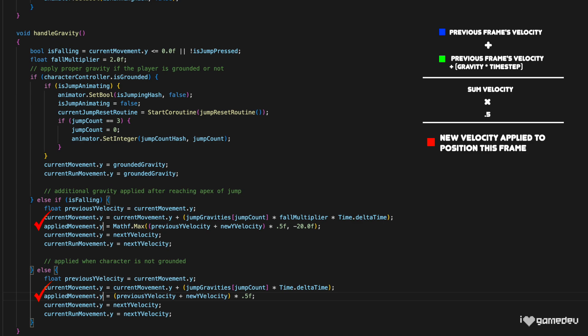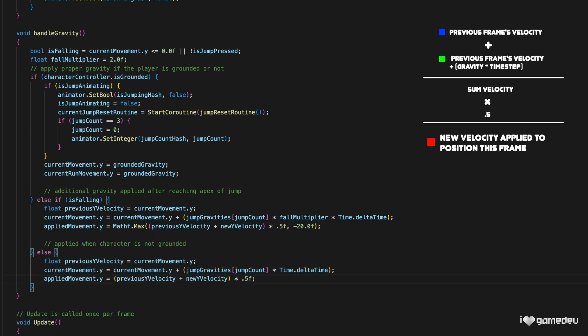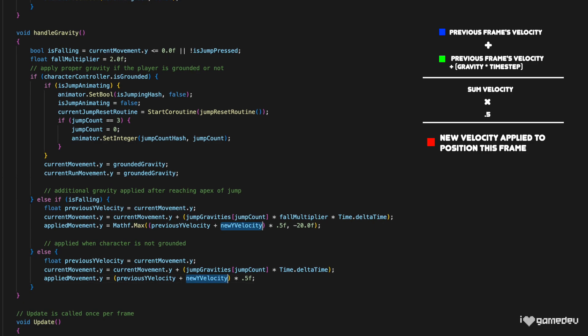And this is the variable that we will set equal to the calculation back in handleGravity. And we'll just delete the currentMovement and currentRunMovement lines because we won't need them after the next change. And remember to replace newYVelocity with currentMovement.y, because newYVelocity does not exist anymore.